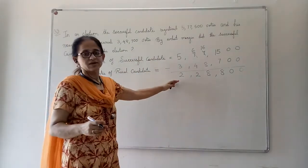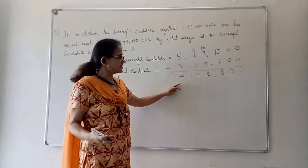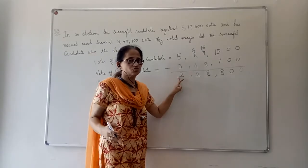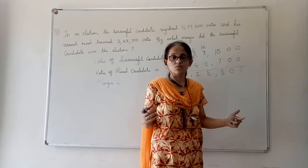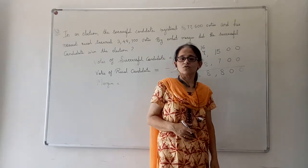So, from here we can make out that the successful candidate got 2,28,800 more votes than he could only win the election.